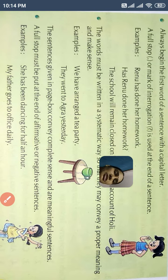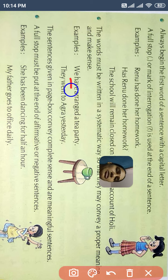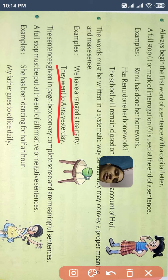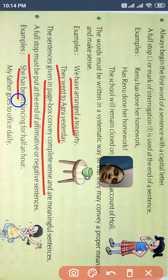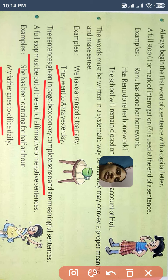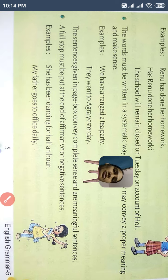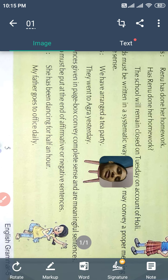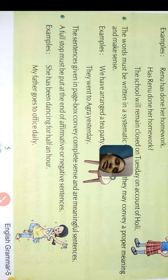So the words written in a systematic way — यानि systematic way में — 'We have arranged a tea party,' 'They went to Agra yesterday' — ये सारे जो sentences दे रखे हैं, ये arranged manner में, सही तरीके से arrange हैं, इनका meaning भी पूरा है। Full stop आएगा, question वाला है तो question mark लगाएंगे, negative है तो 'not' आएगा। For the full stop, it must be put at the end — affirmative या negative कोई भी sentence हो, last में full stop आएगा, question वाला है तो question mark, और exclamatory हो तो exclamation mark.